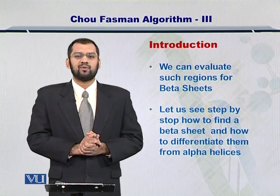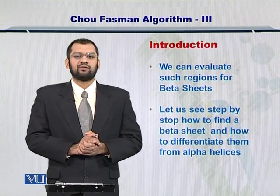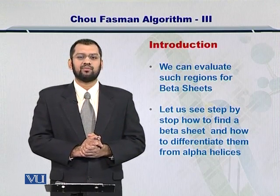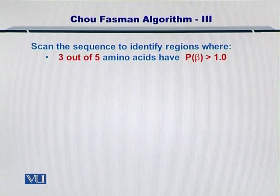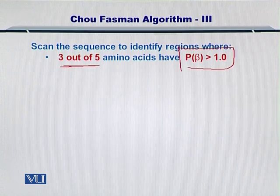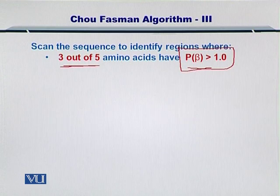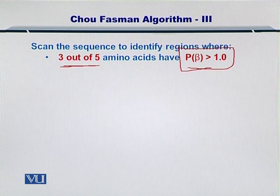As the next step in the Chou-Fasman algorithm, you evaluate amino acid regions for formation of a beta sheet. To start, you continue to scan your sequence to identify regions where 3 out of 5 contiguous amino acids have a propensity for formation of a beta sheet greater than 1. You seed a beta sheet if you find 3 out of 5 contiguous amino acids with a propensity for beta sheet formation greater than 1.